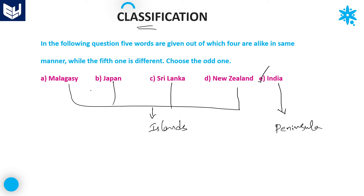Malagasy, Japan, Sri Lanka, and New Zealand — these four are islands. But India is not an island; it is a peninsula. Option E is the right answer.